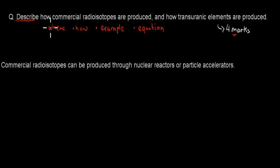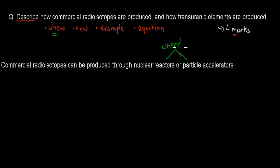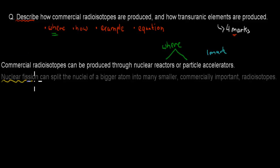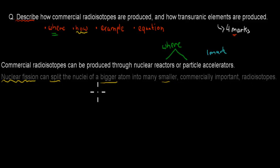Starting with commercial radioisotopes: commercial radioisotopes can be produced through nuclear reactors or particle accelerators. That covers the 'where.' Nuclear fission can split the nuclei of a bigger atom into many smaller, commercially important radioisotopes — that describes 'how' it's produced. The process of nuclear fission results in the splitting of a larger atom into many smaller radioisotopes.